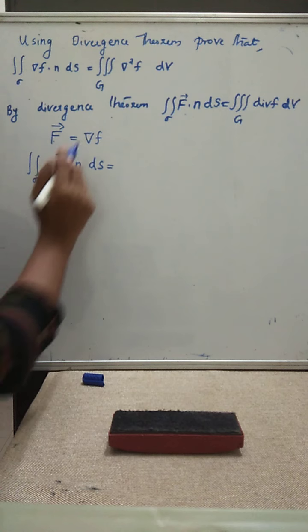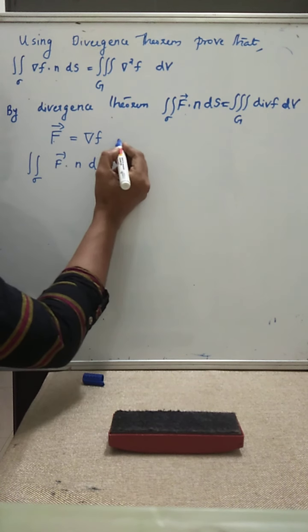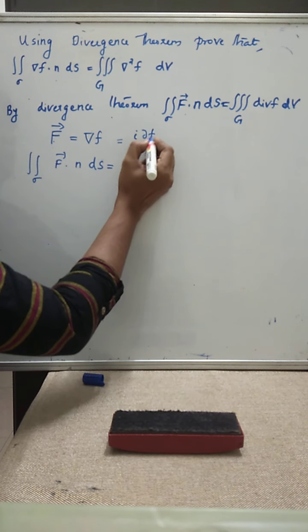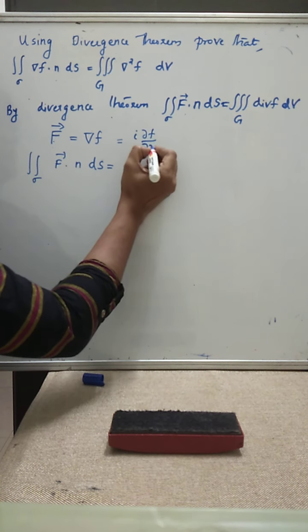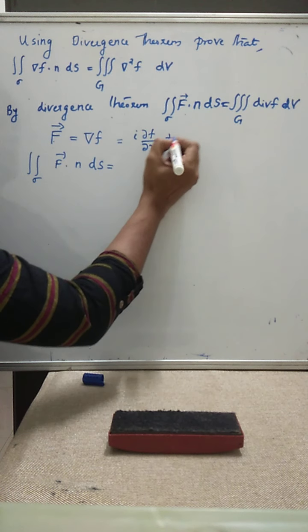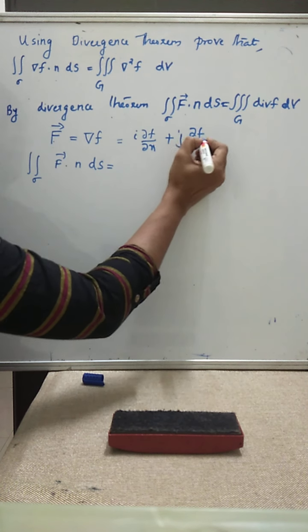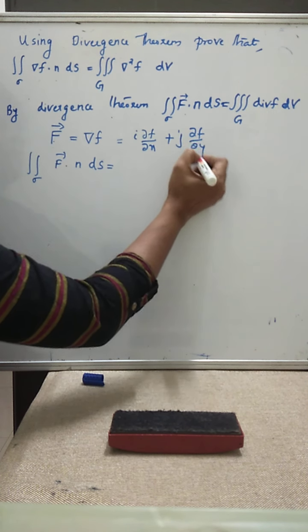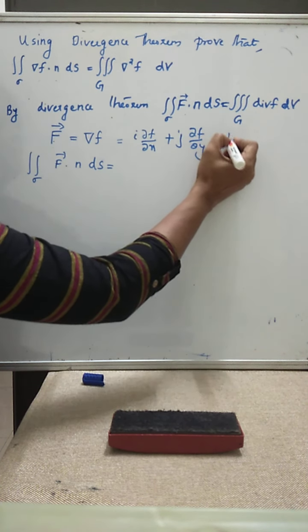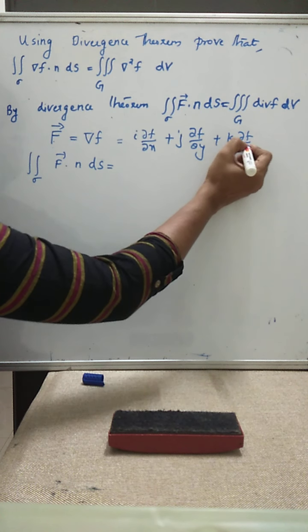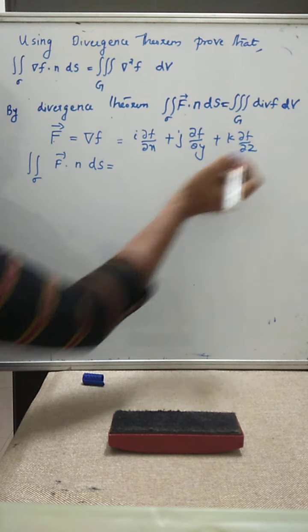Now, what is del f? Del f is i times ∂f/∂x plus j times ∂f/∂y plus k times ∂f/∂z.